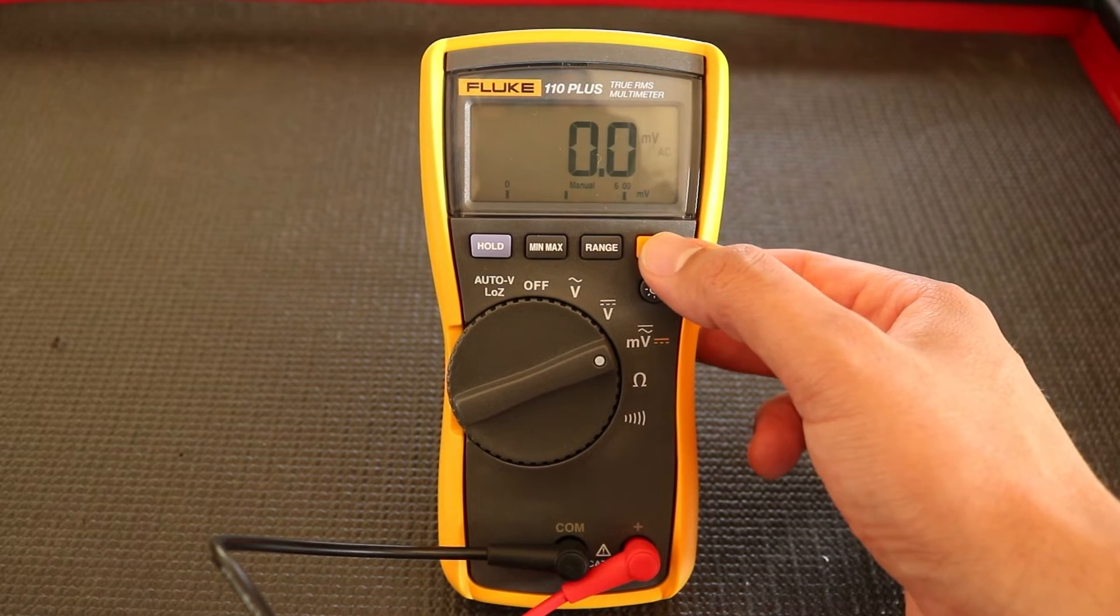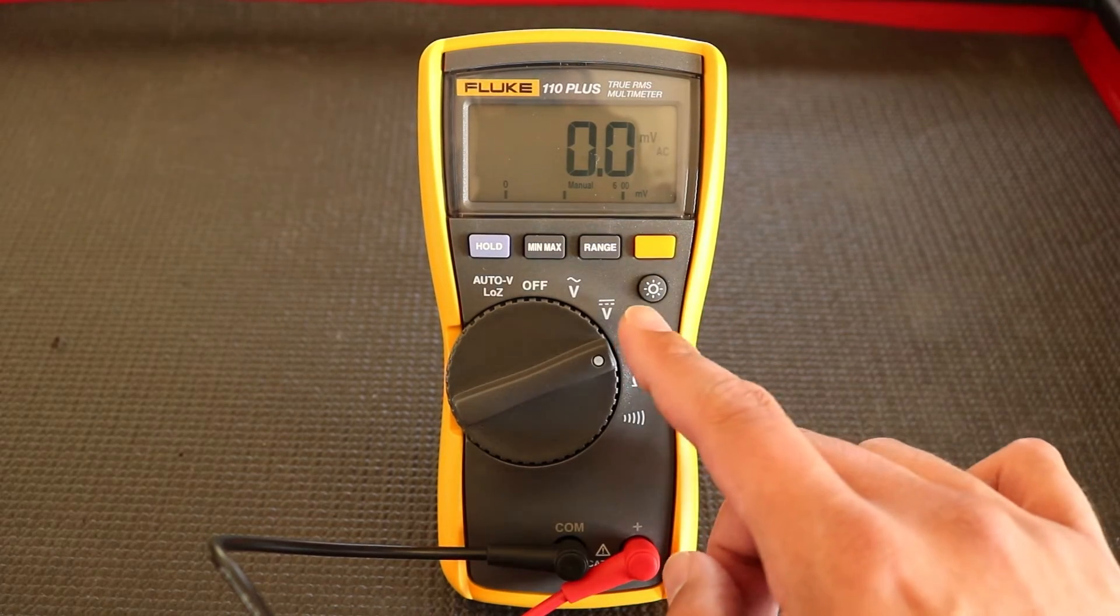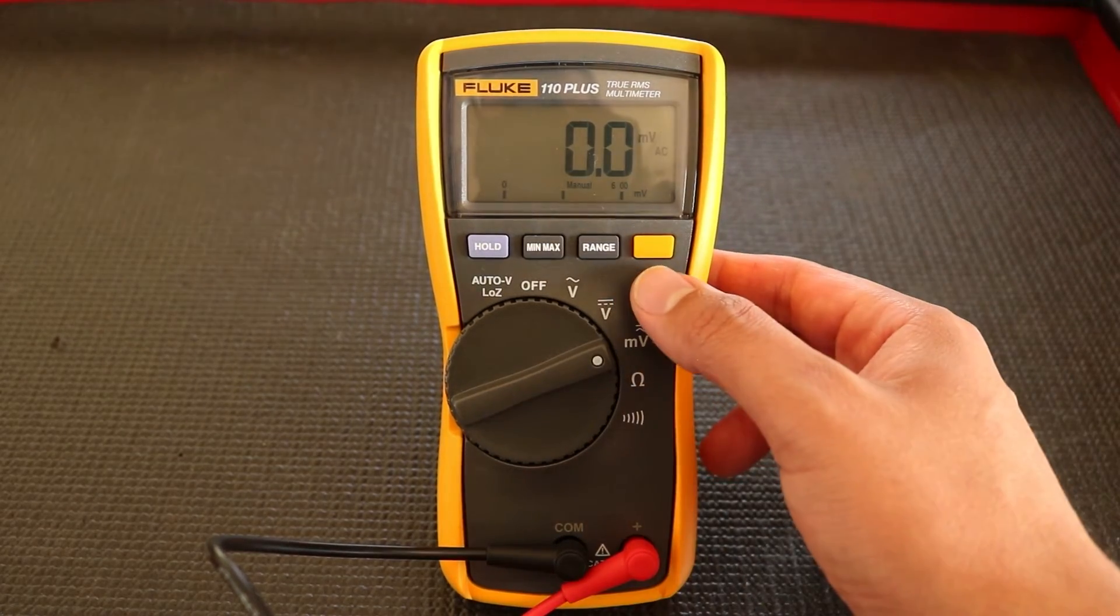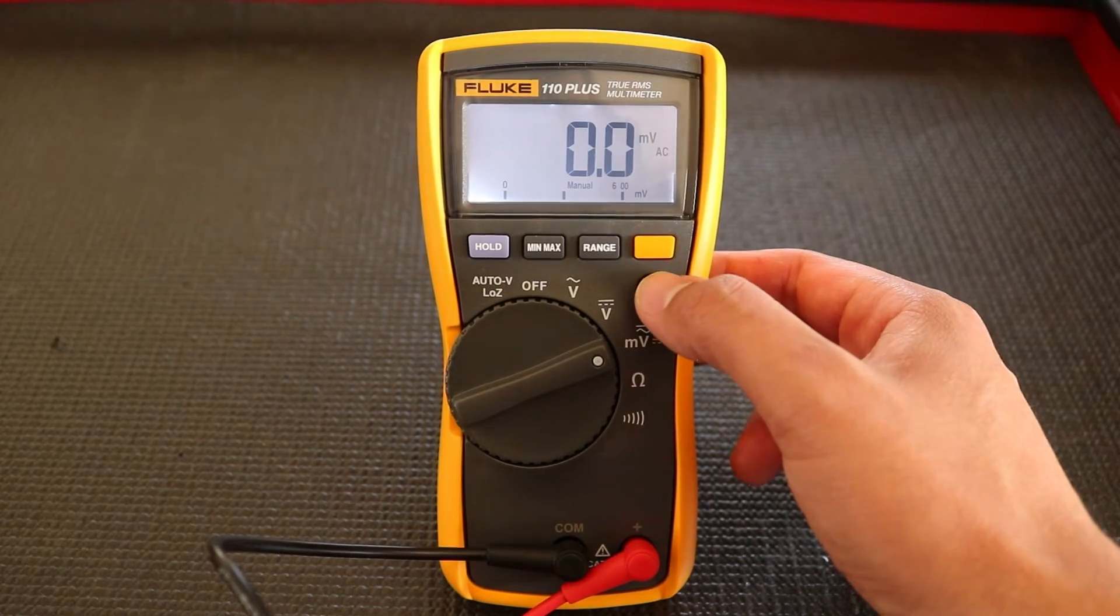DC, AC. Underneath that button, you have the backlight button. And what that does is it allows you to turn on the backlight and turn it off.